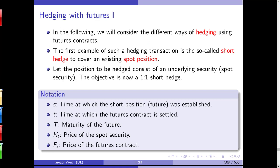We'll start with a one-to-one short hedge. Some notation: S is the time at which the short position — using the futures contract — was established. T is the time at which the futures contract is settled. Capital T is the maturity. Kₜ, from the German Kassakurs, is the spot price, and Fₛ is the forward or futures price.